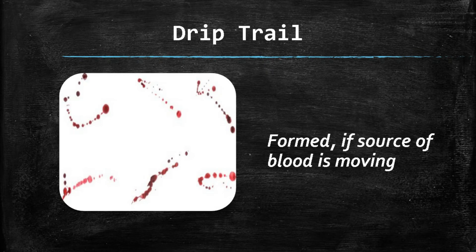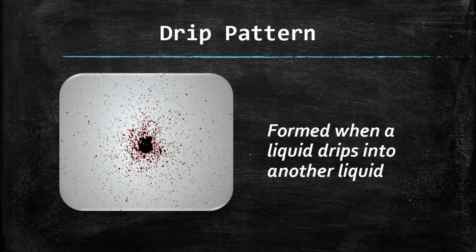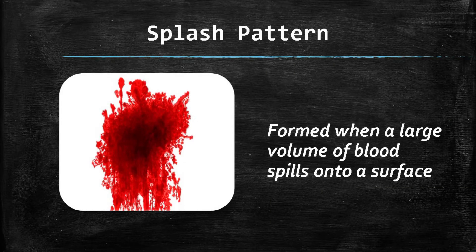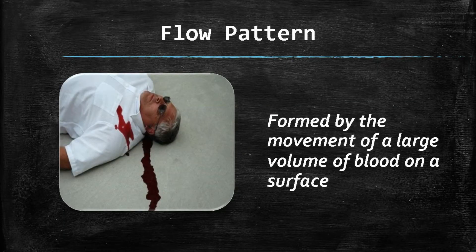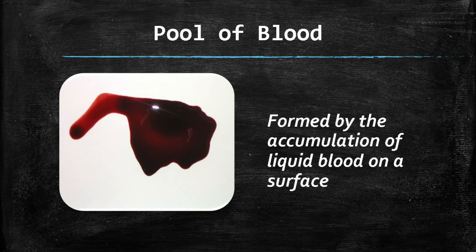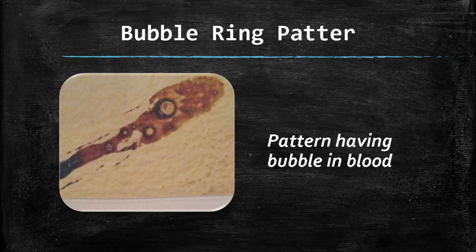A drip trail is formed if the source of blood is moving. A drip pattern is formed when a liquid drips into another liquid. A splash pattern is formed when a large volume of blood spills onto a surface. A flow pattern is formed by the movement of a large volume of blood on a surface. A pool is formed by the accumulation of liquid blood on a surface. A bubble ring pattern is a pattern having bubbles in blood.